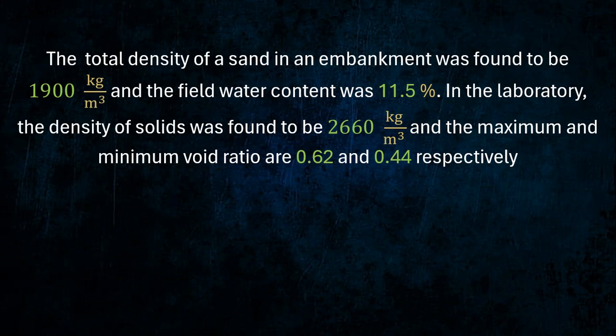The total density of a sand in an embankment was found to be 1,900 kilogram per cubic meter, and the field water content was 11.5 percent. In the laboratory, the density of solids was found to be 2,660 kilogram per cubic meter, and the maximum and minimum void ratios are 0.62 and 0.44 respectively.